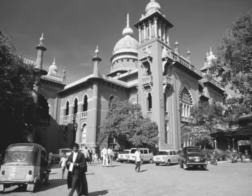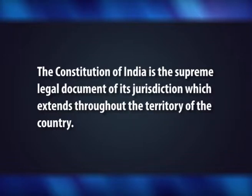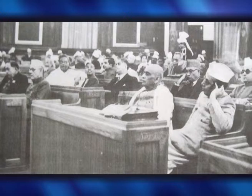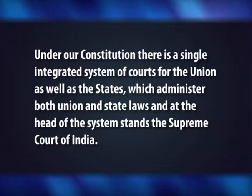India is credited with having the most powerful and independent judiciary in the world. Indian judiciary owes its origin to the judicial system which existed in British India. The Indian judiciary administers a common law system of legal jurisdiction in which customs, precedents and legislation all codify the law of the land. After independence, the constituent assembly which drafted the constitution provided for the establishment of a three-tier judiciary which is completely independent of the other two organs of the state, the executive and the legislature. At the head of the system stands the Supreme Court of India.